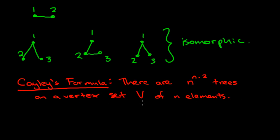It tells us that if we have a vertex set V of n elements, like in this case we had one, two, three as the vertex set, then there are a total of n to the power of n minus two trees on that vertex set. So in this particular example, we have n equals three. And the total number of trees should be three to the power of three minus two. So three to the power of one gives three. And that's what we had here.